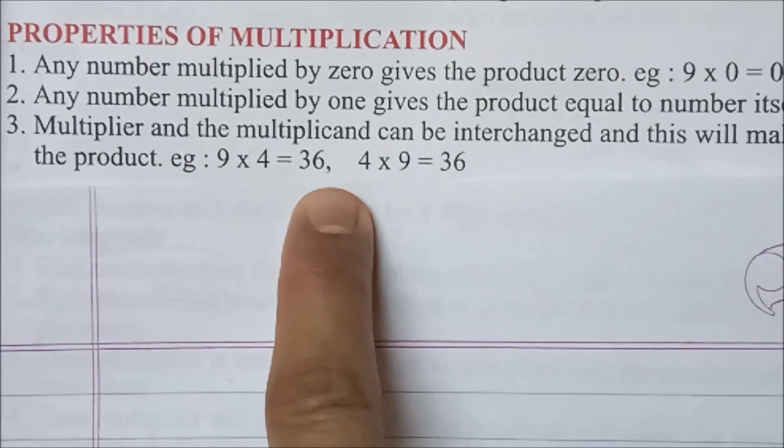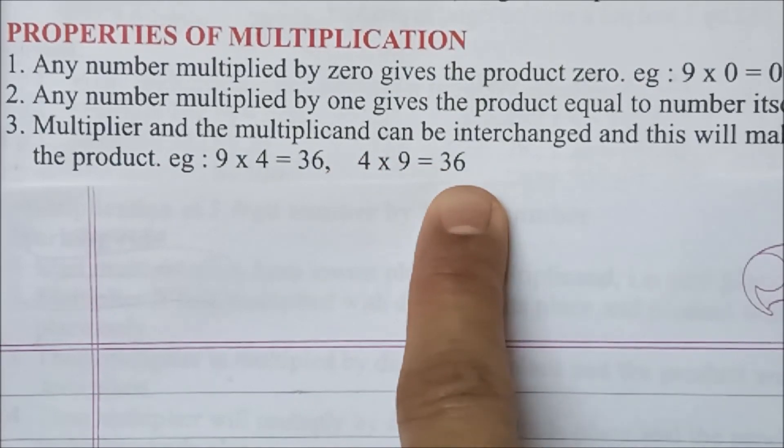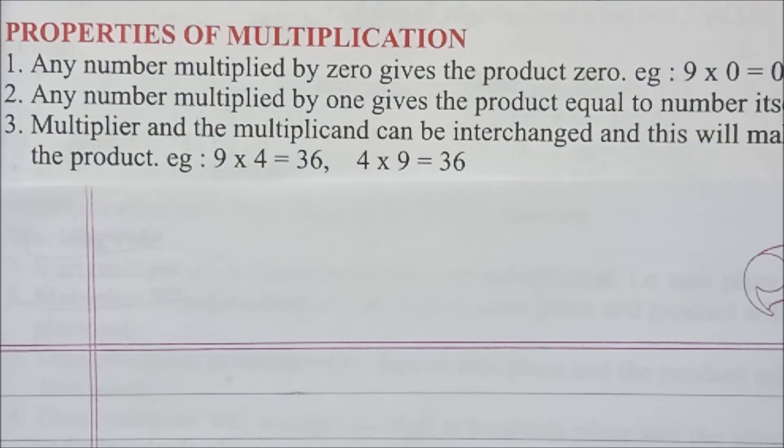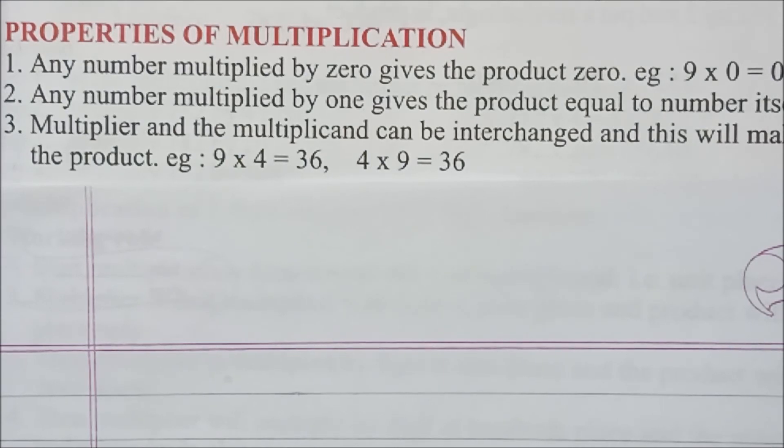Example: 9×4 = 36 and 4×9 = 36. Multiplicand और multiplier की positions change हो जाएं, या उन numbers को आप interchange कर दें, तो भी multiplication का product change नहीं होगा, वो same ही होगा.